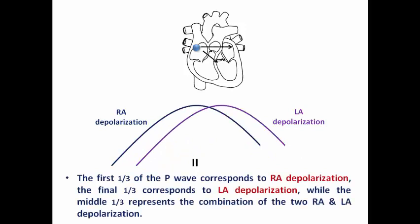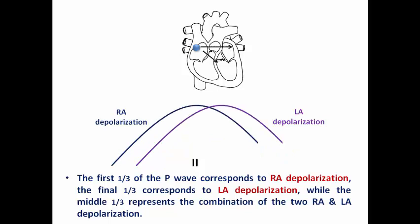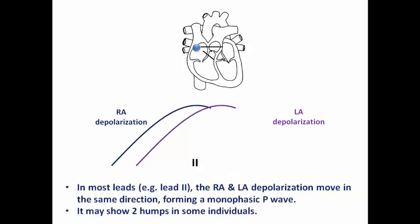The first third of the P wave corresponds to right atrial depolarization, as seen in the animation. The final third corresponds to left atrial depolarization, while the middle component represents the combination of both. In most leads, such as lead 2, right and left atrial depolarization move in the same direction, forming a monophasic P wave.